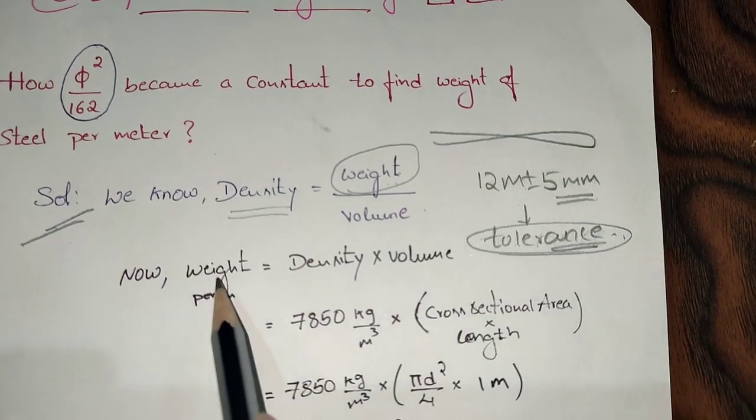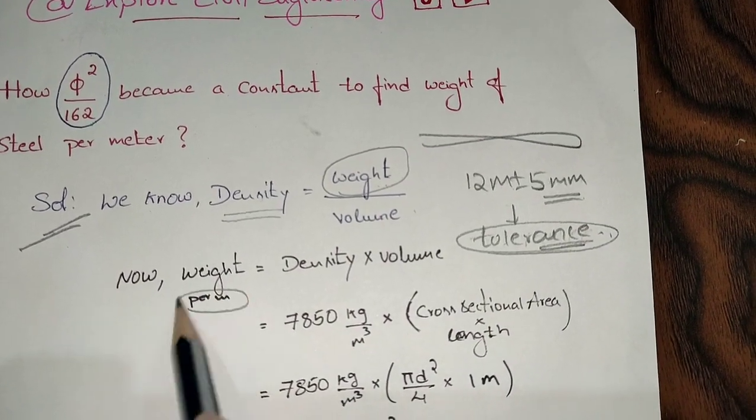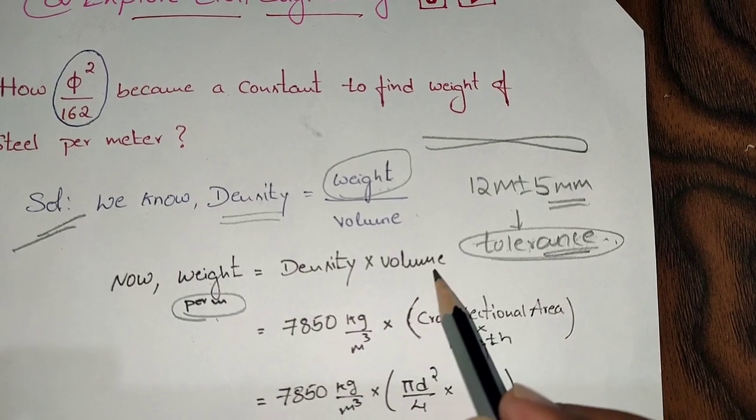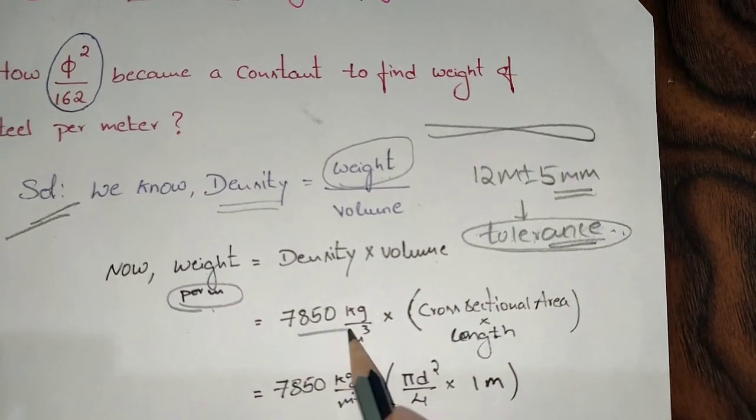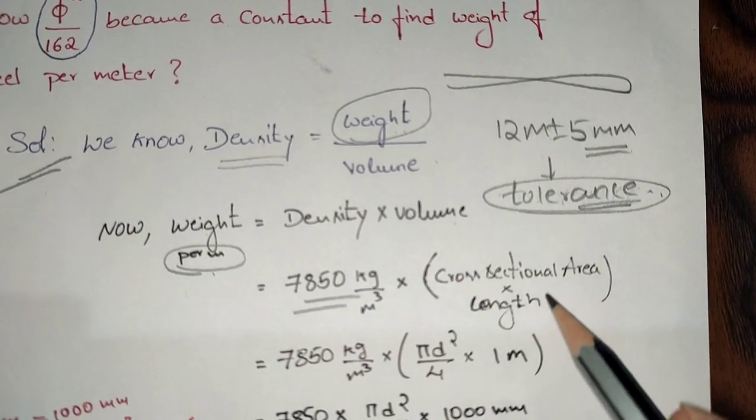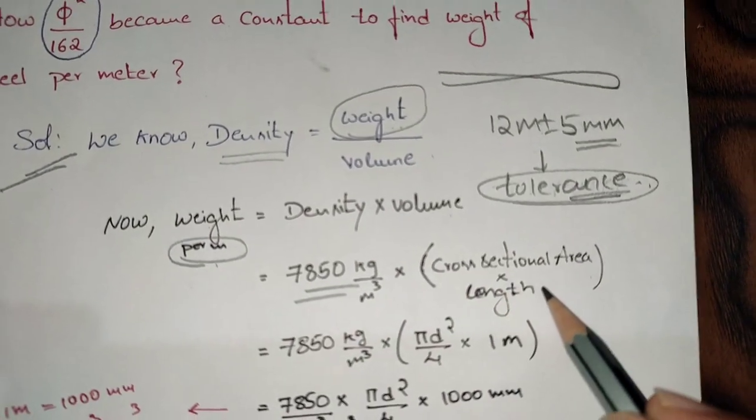Now weight equals density into volume. Here the density of steel is 7850 kg per meter cube, and volume is given as cross sectional area into length of the steel rod.